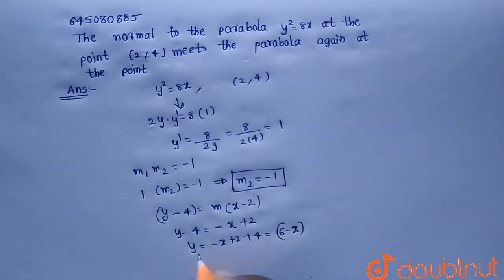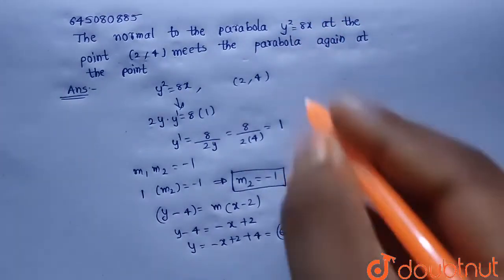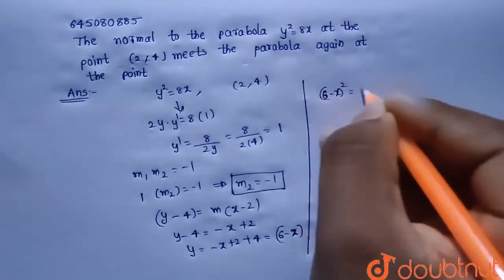Now let us put this y = 6 - x in the given equation y² = 8x to find the other point. So (6 - x)² = 8x.